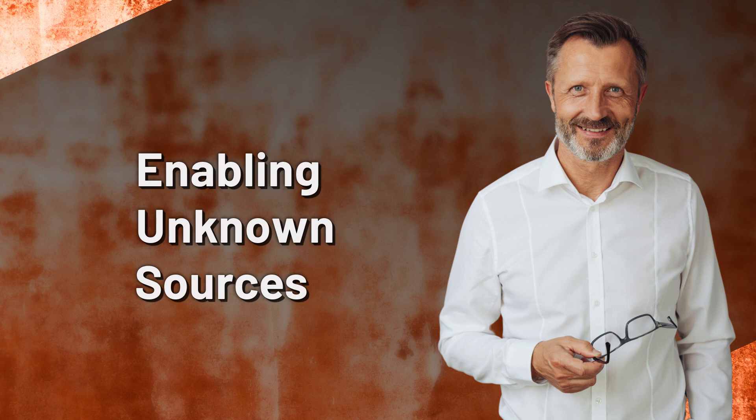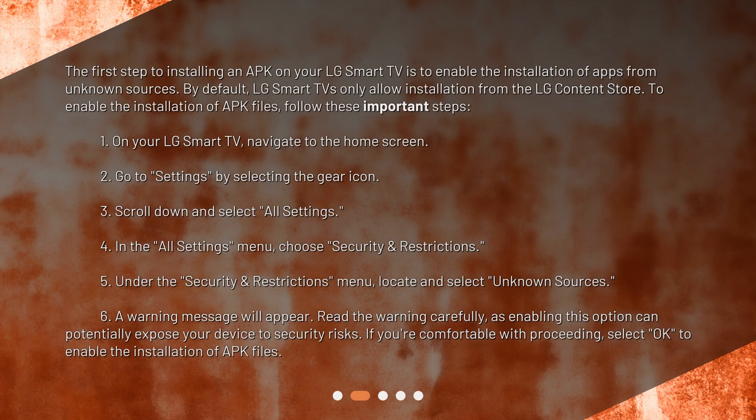Enabling Unknown Sources. The first step to installing an APK on your LG Smart TV is to enable the installation of apps from unknown sources. By default, LG Smart TVs only allow installation from the LG Content Store. To enable the installation of APK files, follow these important steps.